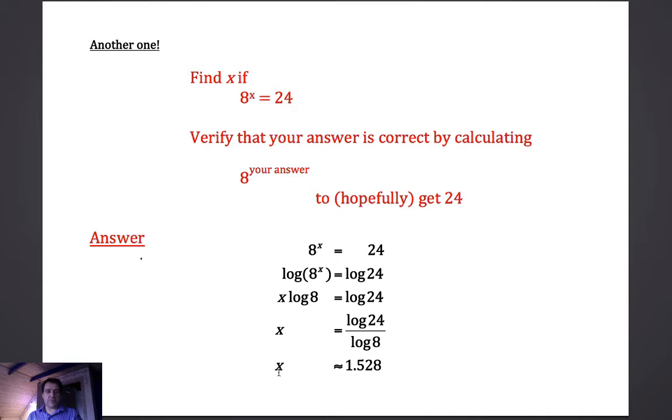And it all works out to be about 1.528. So x is about 1.528 or in other words 8 to the power of about 1.528 is equal to 24.